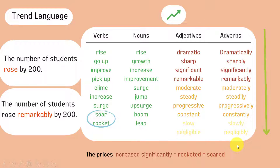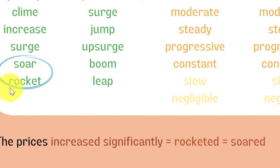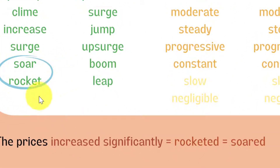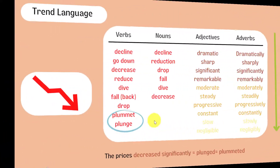I've listed the trend words you need to describe diagrams in IELTS writing task 1. Make a note of this vocabulary. Be careful with soar and rocket — they don't take adverbs because they already mean a big increase. The same is true about plummet and plunge, because they mean a big decrease.